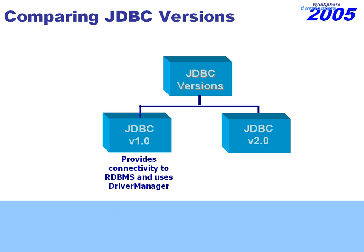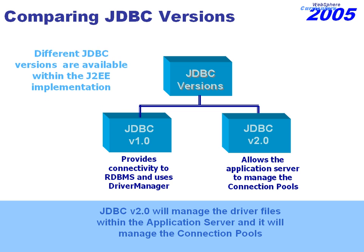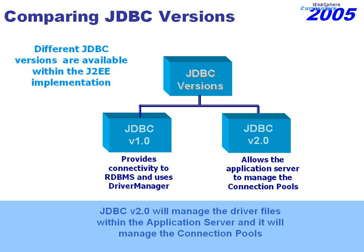We later came across version 2 of the JDBC architecture. The difference with version 2 is that the role of managing connections and managing access to relational structures is now handled by the application server. So lots of things that were handled by the Java applications themselves in version 1 are now being handled and managed by the application server. The flexibility aspects of JDBC version 2 greatly enhanced our ability to access and work with relational structures.